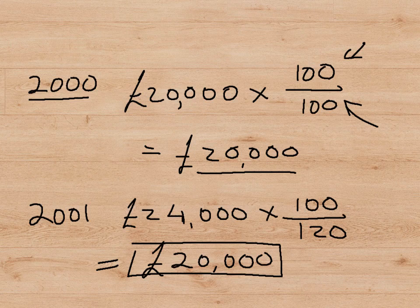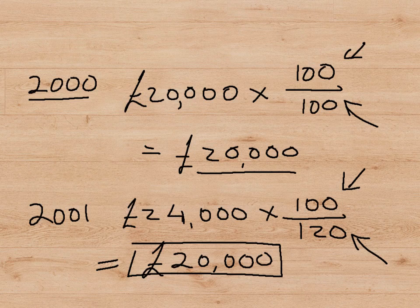If we do the same for 2001, we will see how this inflation adjustment actually works. The nominal GDP in 2001 was 24,000 pounds because we sold two cars at 12,000 pounds each. If we take this nominal GDP and multiply it by the ratio of the index number in the base year to the index number in the current year, we get 100 over 120. Multiplying 24,000 by 100 over 120 gives us 20,000. So the adjusted GDP is 20,000 — exactly the same as last year. By this procedure, we have adjusted for the fact that prices went up but output didn't actually change.